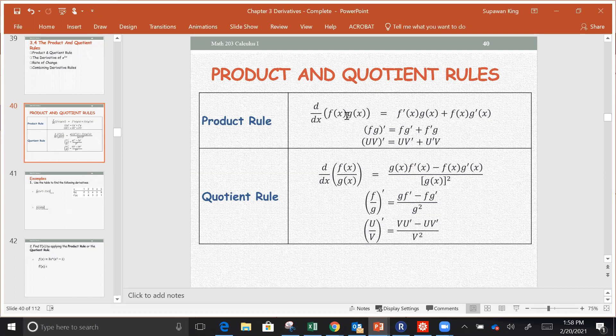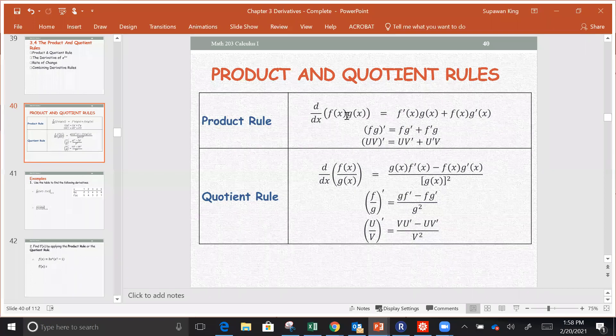The quotient rule, or the derivative of f divided by g, is g times f' minus f times g' divided by g squared.